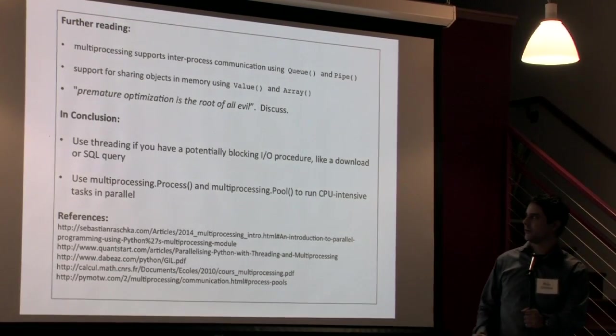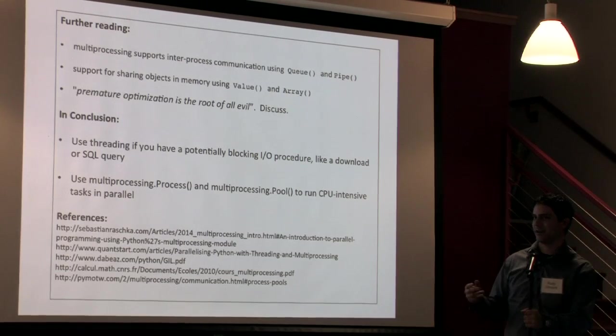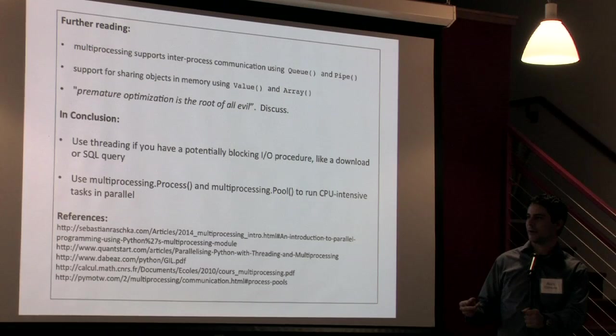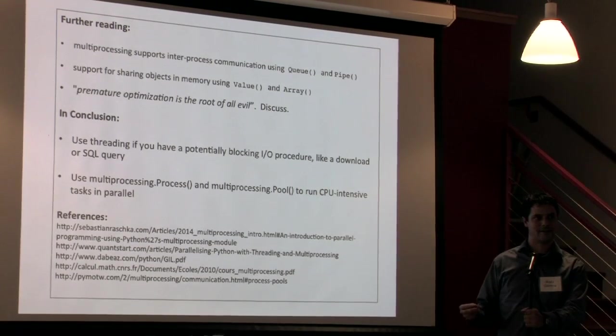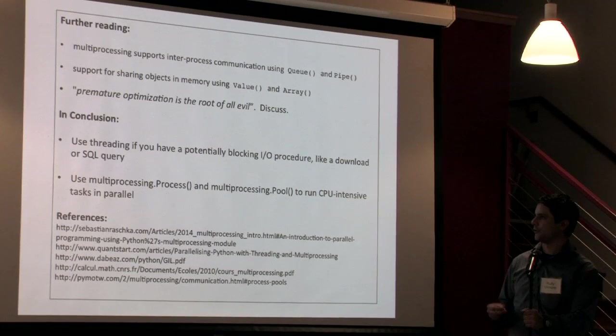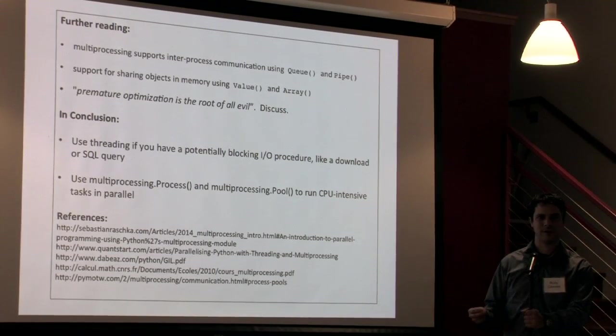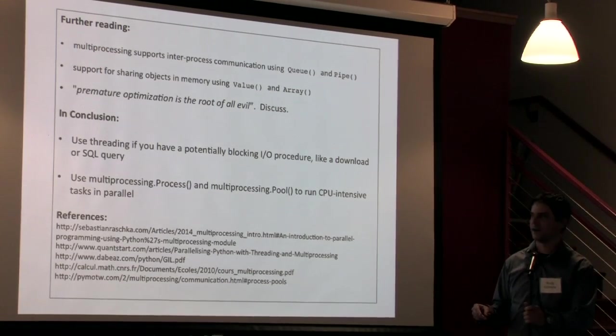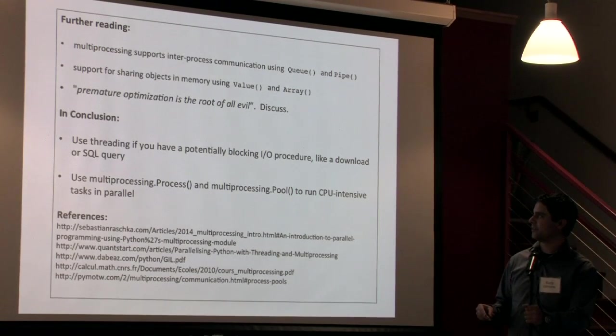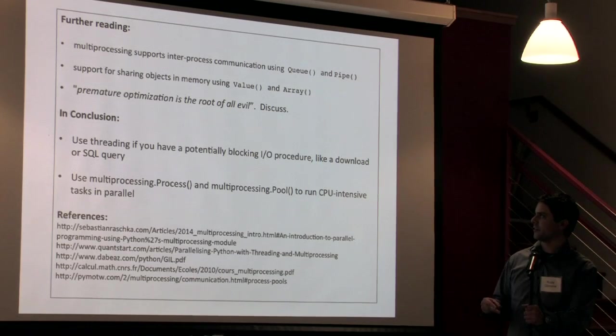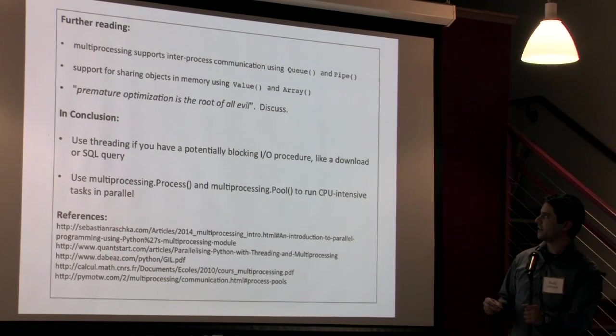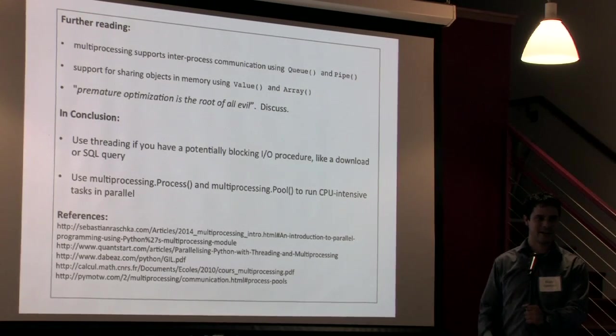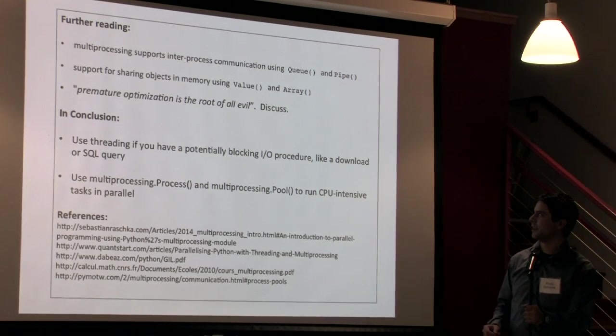But of course there's a saying in computer science that premature optimization is the root of all evil. So that's something that you certainly want to think about when you're setting this up. And in general the approach that you're going to want to use is first get it working in a serial method on one core. Then look at places where you have this embarrassingly parallel type of configuration that you can easily put into a multi-processing pool or something like that. And then and only then should you really think about trying to send these objects back and forth sharing data between processes because that can get very messy very quickly.